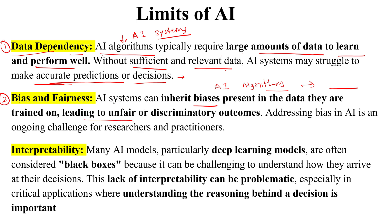This can lead to discriminatory outcomes. We know that AI systems need a large amount of data, and if there is bias present in that data, because of that bias, AI systems can generate discriminatory outcomes and unclear decisions. So addressing bias in AI is an ongoing challenge for researchers and practitioners.